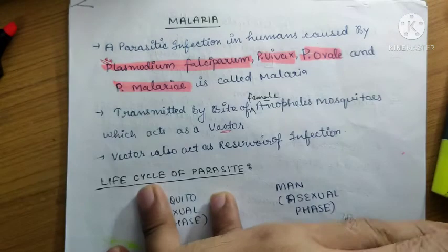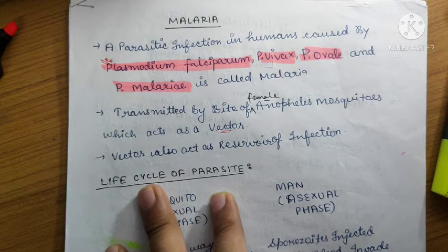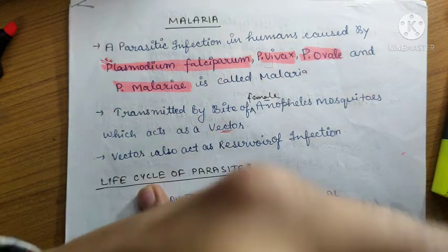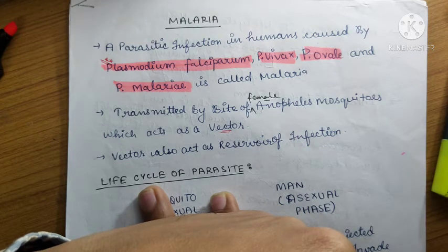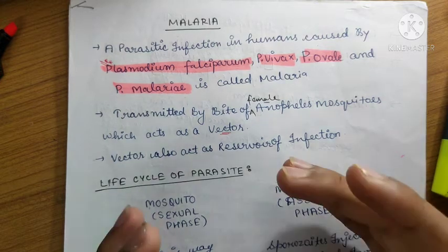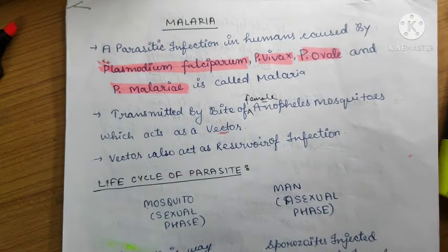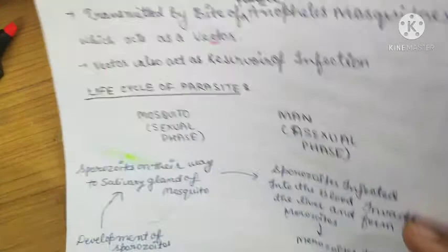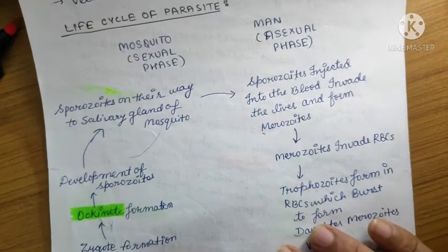The vector also acts as a reservoir of infection, because it must be reserving the infection before transmitting it to another species. Now, what happens during the attack of malaria fever will be understood through the life cycle of the parasite.